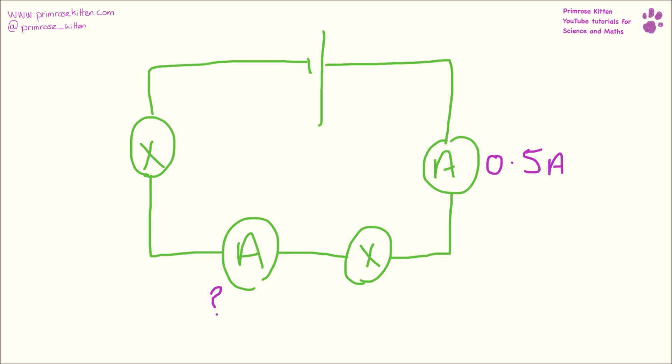Here we have 0.5 volts. We know they are all the same in a series circuit, so that one there must be 0.5 as well.